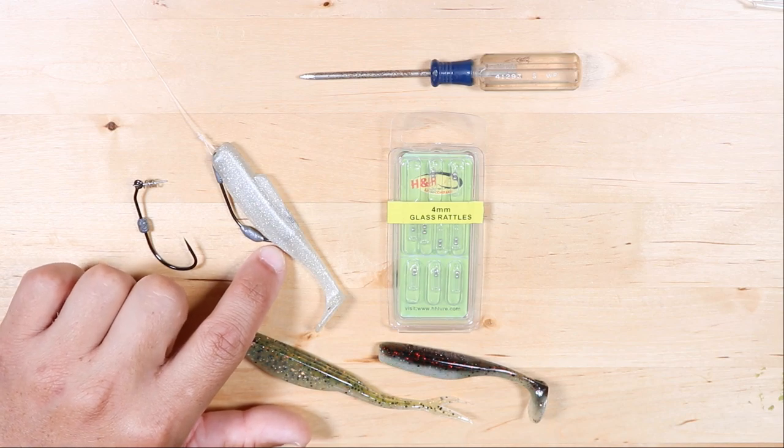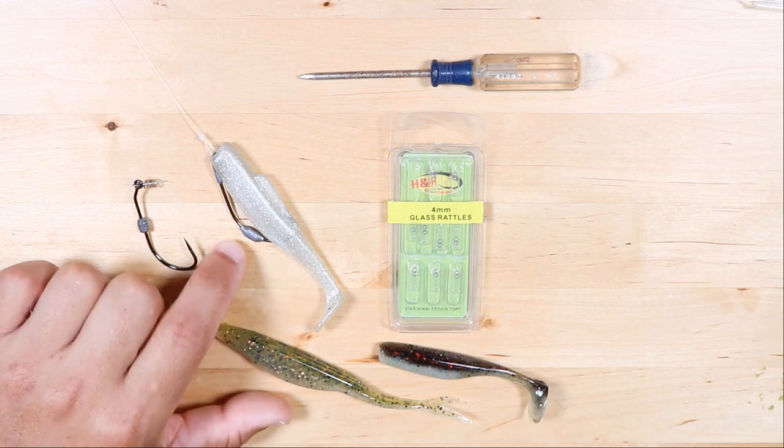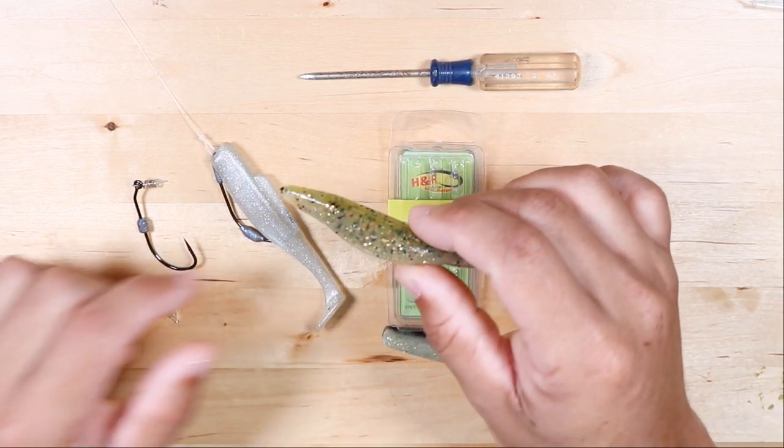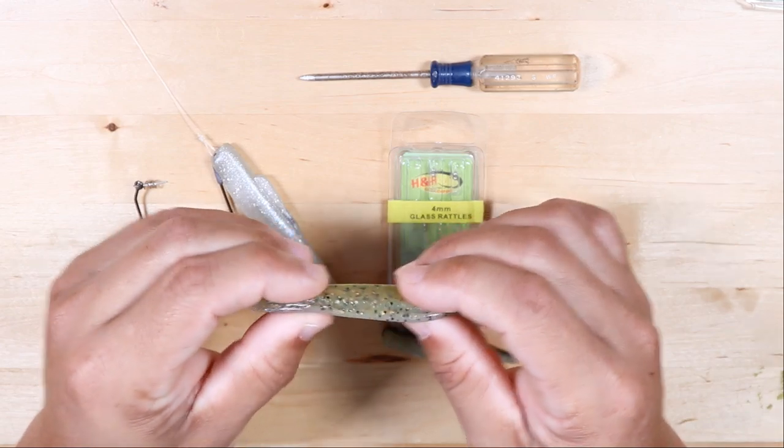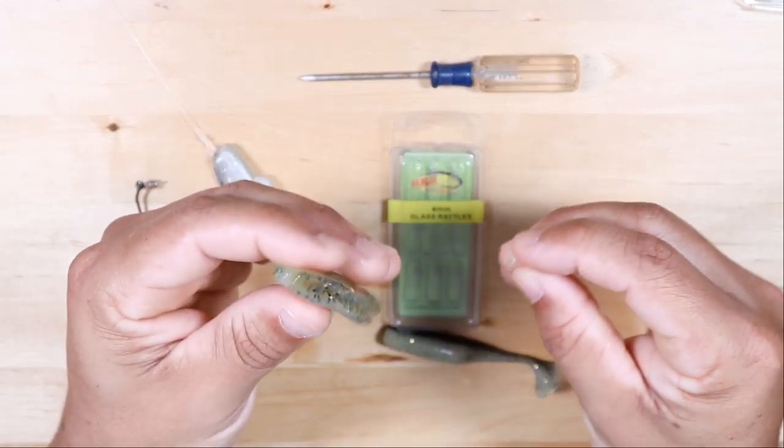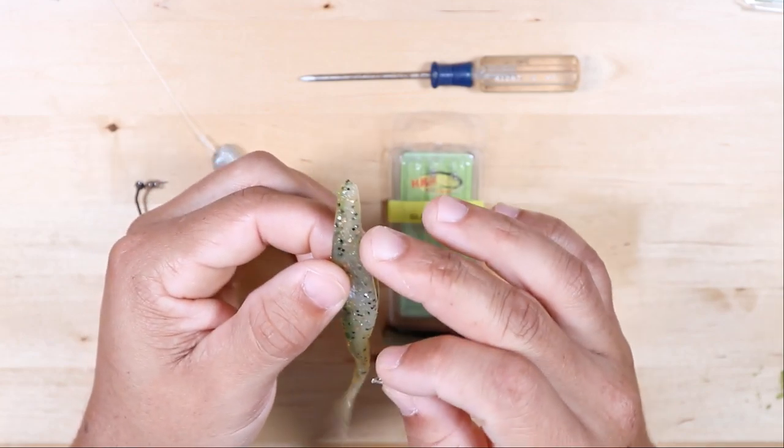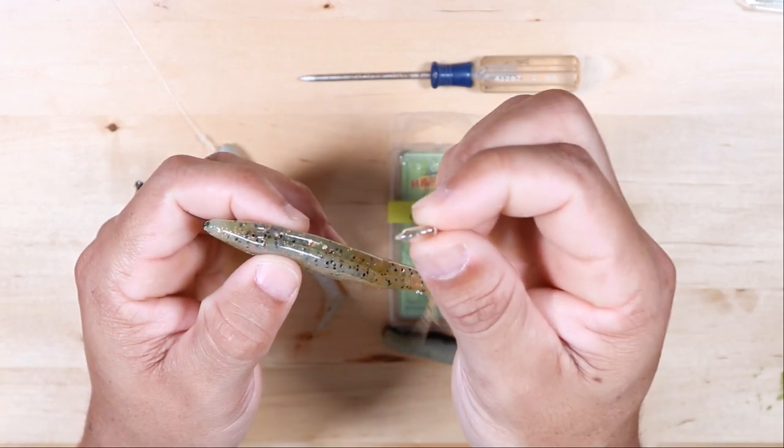I'm going to show you how to rig them up on these standard soft plastic lures and then also on the Z-Man baits, which can be a little bit tougher. This is a Zoom Jerk Bait, a Zoom Super Fluke, and it's sort of that dense rubber material. When you put these into your bait, again make sure that you know where your hook's going to rest on the bait.